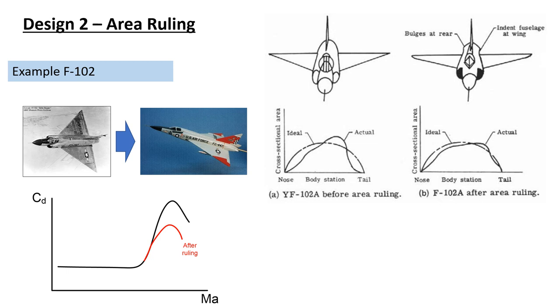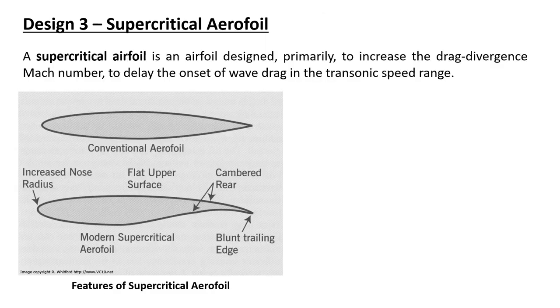Now we can finish the second design, area ruling. The last one is called supercritical aerofoil, and it's used in every transonic airplane nowadays, I would say. A supercritical aerofoil is an aerofoil designed primarily to increase the drag divergence Mach number, and to delay the onset of wave drag in a transonic speed range. Here is a one-to-one comparison of the conventional aerofoil and supercritical aerofoil. For the supercritical aerofoil, let's see the features. It has increased nose radius, and the top surface is flatter, so flat upper surface. Since we want to generate lift, we need to introduce some camber to the aerofoil. So the camber is concentrated close to the trailing edge. And also we have blunt trailing edge. So this is the design features of the modern supercritical aerofoil.